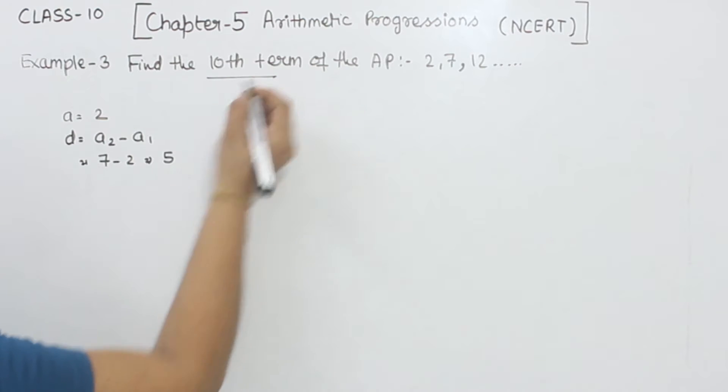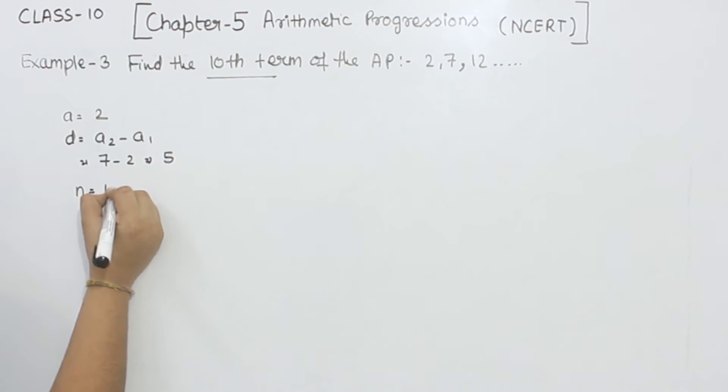And we have to find the 10th term, so N is equal to 10. Now we write the formula: AN equals A plus N minus 1 times D.